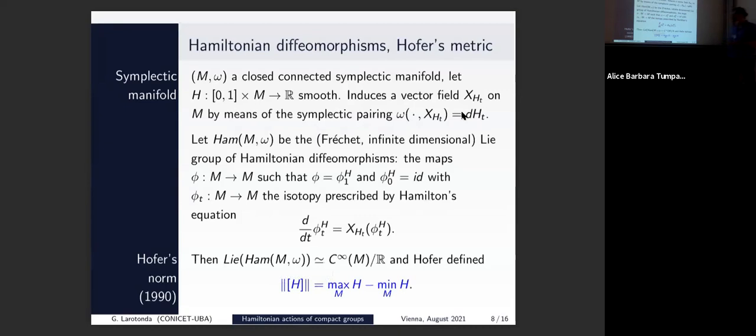Introducing the Hofer norm in the algebra of this group. In the infinite-dimensional setting, the algebra can be identified with the quotient of functions on M divided by the constants — this is an artifact of the definition, since adding a constant to a Hamiltonian function defines the same vector field. And this is Hofer's norm in the group of Hamiltonian diffeomorphisms: the maximum minus the minimum of the Hamiltonian. Things start to look like the formulas we had in the previous slides.